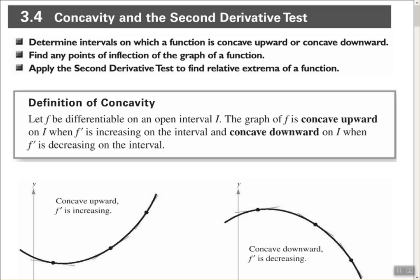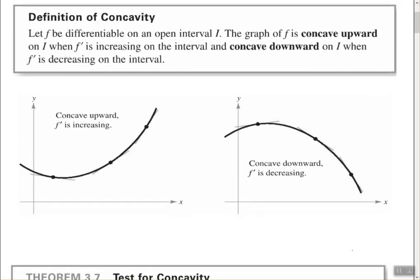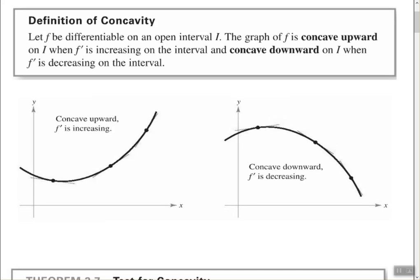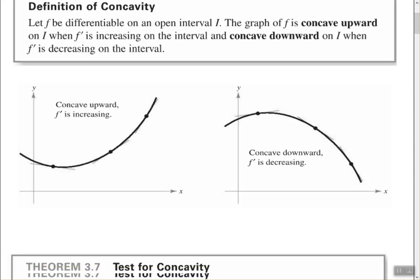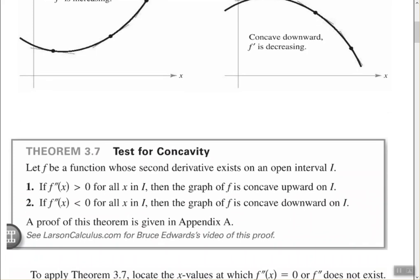The definition of concavity: let f be differentiable on an open interval I. The graph of f is concave upward on I when f prime, the first derivative, is increasing on the interval, and concave downward when the first derivative is decreasing on an interval. When the first derivative is increasing, the graph is concave upward, and at some point we will have a relative minimum. When the first derivative is decreasing, it is concave downward.